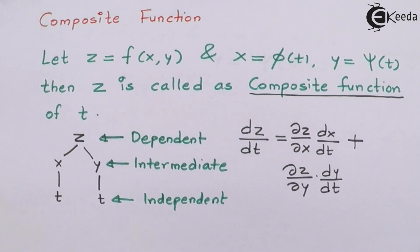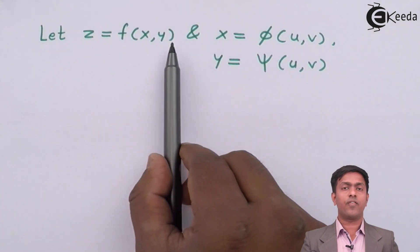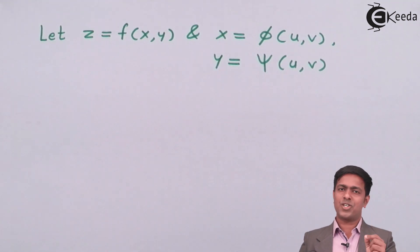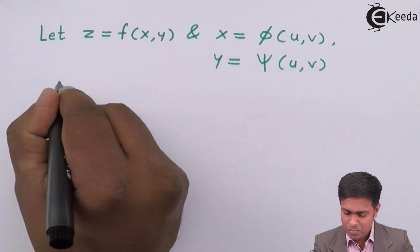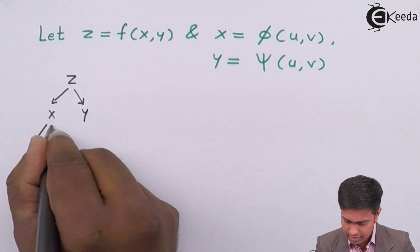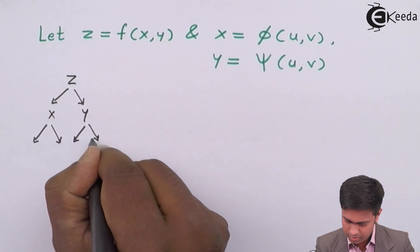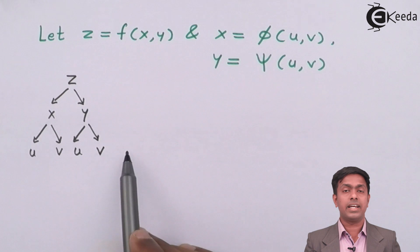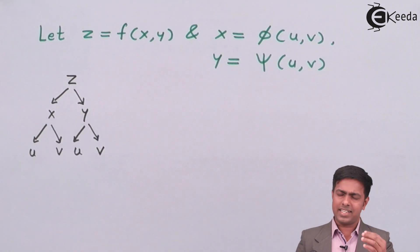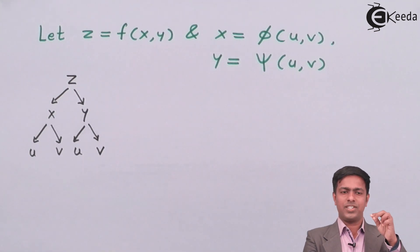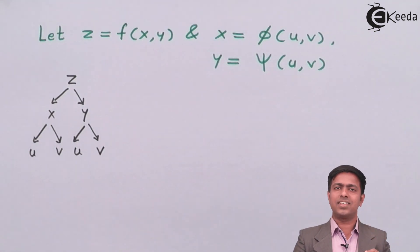Now let's look at another type of composite function. Here Z is a function of X and Y, but X is a function of U and V, and Y is also a function of U and V. Drawing the tree diagram: Z depends on X and Y; X and Y each depend on U and V. Z is dependent, U and V are independent, and X and Y are intermediate variables. Since Z is a function of both U and V, we can find partial derivatives.